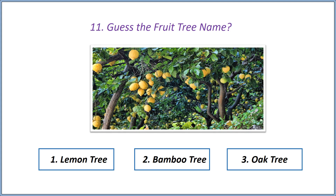Eleventh question: guess the fruit tree name. Options — first option: lemon tree, second option: bamboo tree, third option: oak tree. Answer is lemon tree.